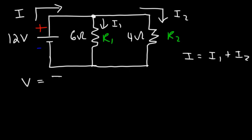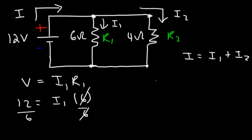What we need to use is Ohm's law: V = IR. To find i1, the current flowing through resistor 1, we need the voltage across that resistor and the resistance itself. In a parallel circuit, the voltage across resistors connected in parallel is the same. Both resistors are connected across the same 12-volt battery, so V is 12 and R1 is 6, giving i1 = 12/6 = 2 amps.